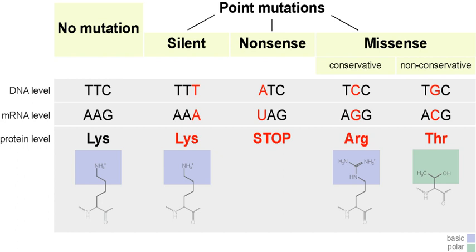Missense mutations code for a different amino acid, changing a codon so that a different protein is created — a non-synonymous change. Conservative mutations result in an amino acid change; however, the properties of the amino acid remain the same, such as hydrophobic or hydrophilic. At times, a change to one amino acid in the protein is not detrimental to the organism as a whole, as most proteins can withstand one or two point mutations before their function changes.